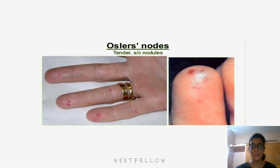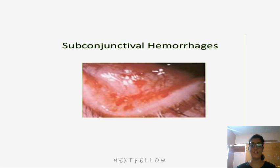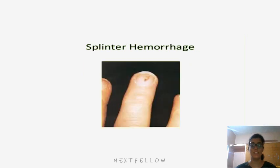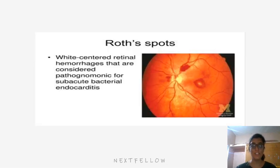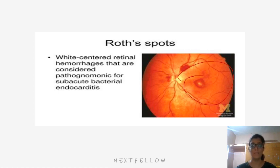Osler's nodes are tender subcutaneous nodules. There are also subconjunctival hemorrhages and splinter hemorrhages seen in infective endocarditis. Roth spots are white-centered central retinal hemorrhages that are considered pathognomonic of subacute bacterial endocarditis.